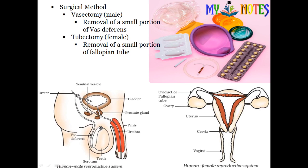Vasectomy involves the removal of a small portion of the vas deferens. The doctor takes out and cuts a portion of the vas deferens, so the sperm collected cannot travel and cannot be released. This is the vasectomy, a surgical sterilization method performed in males.